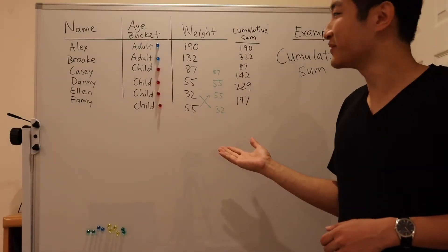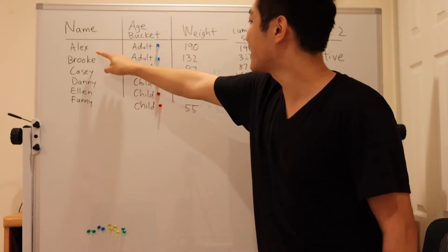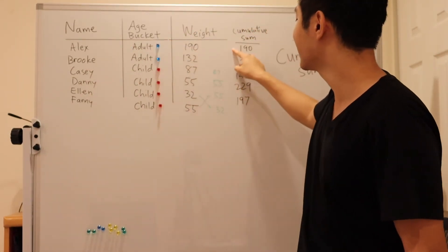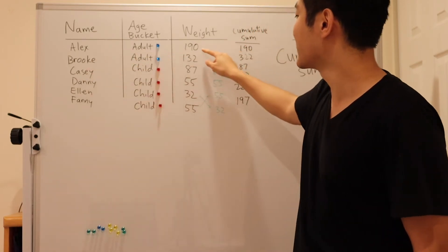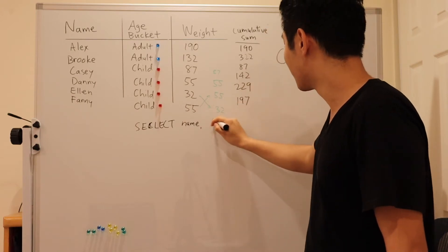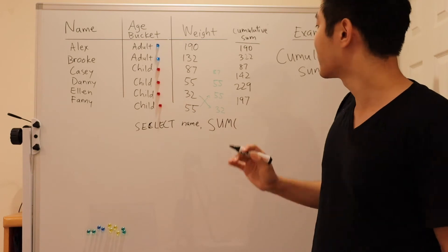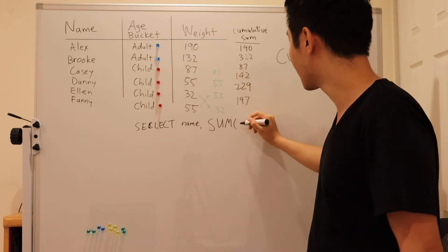And our second example is cumulative sum. Looking at adults only, Alex should start at 190. Brooke is 190 plus 132, which is 322. As the name implies, we're going to sum over which column. We're going to sum over weight.